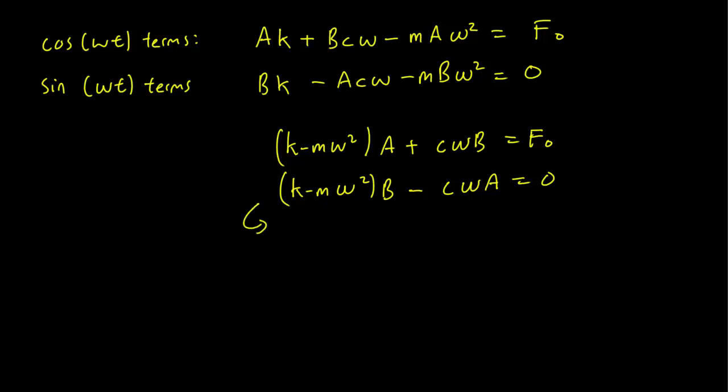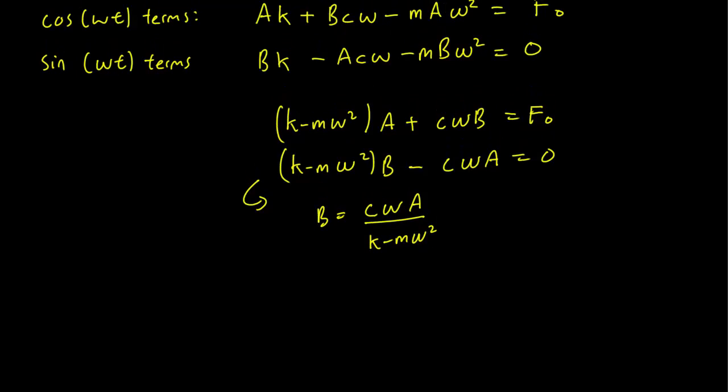So the second equation just gets us that b equals c omega a over k minus m omega squared. And plugging that in to the first equation, this gets us, oh sorry, I mean plugging that in from the first equation, this gets us plus c omega squared a over k minus m omega squared equals f naught.